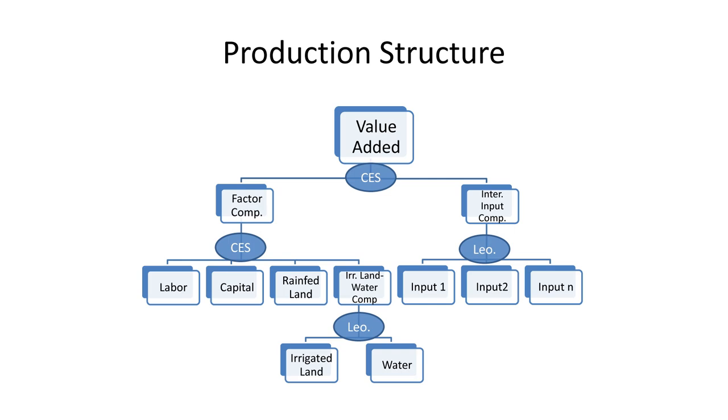This is the production structure. The only difference from what Ismail told is this irrigated land-water nest at the production function. We put a Leontief nest to capture irrigated land demand better. Irrigated land and water combine as a composite, then go into the CES production function.